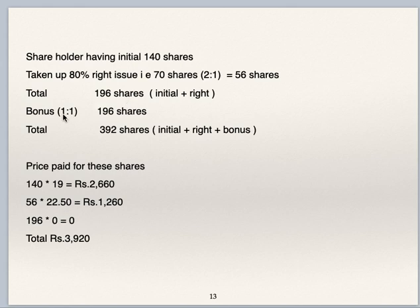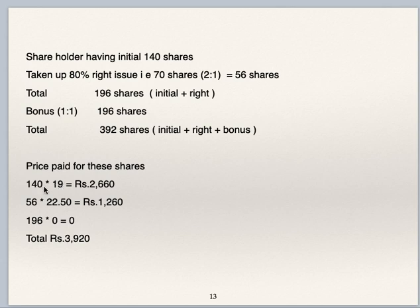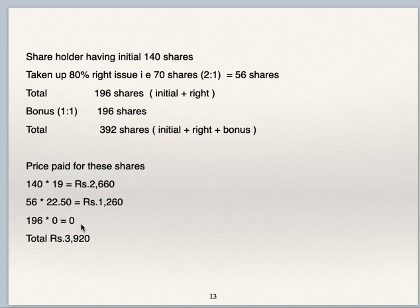Bonus is in the ratio of 1:1, so 196 bonus shares are issued to him. The total number of shares which he has after the bonus is 196 plus 196 = 392 shares. Now we have to find out what is the price paid by him for these shares. For the initial 140 shares, he paid Rs 19 per share: 140 × Rs 19 = Rs 2,660. For the 56 right shares, he paid Rs 22.50 per share: 56 × Rs 22.50 = Rs 1,260. Bonus shares are free of cost — for 196 bonus shares, nothing was paid. So total amount paid by him is Rs 2,660 + Rs 1,260 = Rs 3,920.